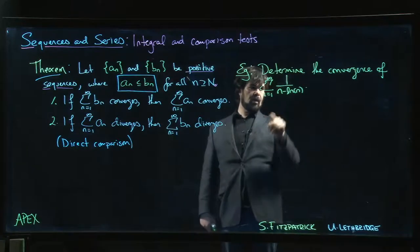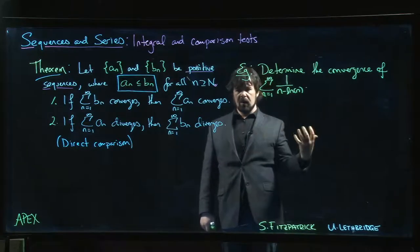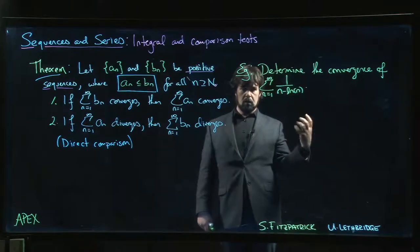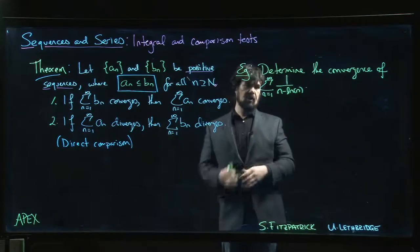And subtracting something off from n is only going to make the denominator smaller, which is going to make the terms in this series bigger, which should mean it still diverges. And of course, that's the whole point of the comparison test, right?